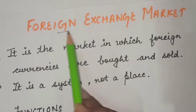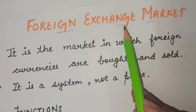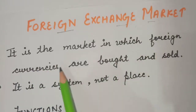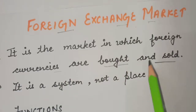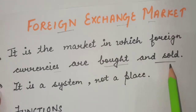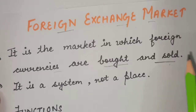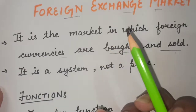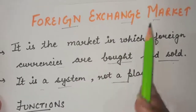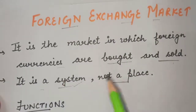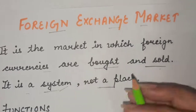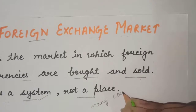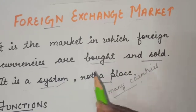The next topic is the foreign exchange market. It is the market in which foreign currencies are bought and sold. Buyers and sellers include individuals, firms, foreign exchange brokers, commercial banks, and central banks. You need to understand that like any other market, it is a system — it is not a place. Transactions in this market are not confined to one country; there are many countries and many currencies involved in the foreign exchange market.